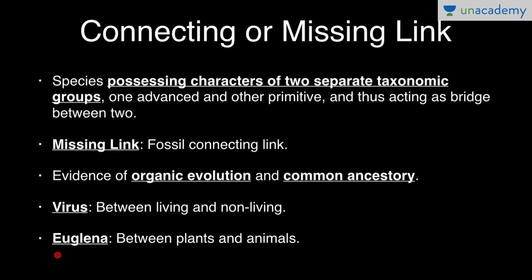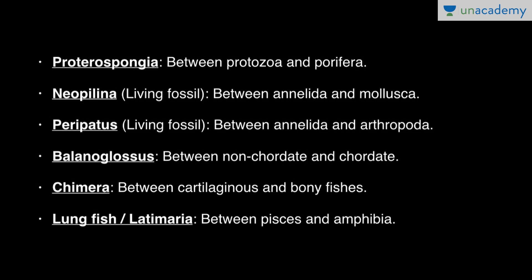Second is Euglena — it is a connecting link between plants and animals. Next is Proterospongia, connecting link between Protozoa and Porifera. Neopalina is a living fossil and it is a connecting link between Annelida and Mollusca.